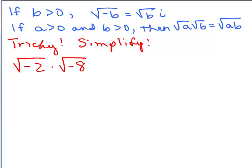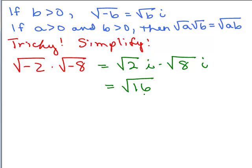Here's the tricky problem. If b is greater than zero, then the square root of negative b equals the square root of b times i. And only if a and b are both greater than zero can you multiply square roots together. Try this: square root of negative 2 times square root of negative 8. Rewrite as √2·i times √8·i. Since the numbers under the square root are now positive, multiply them: square root of 16, and i times i is i squared. Square root of 16 is 4, and i squared equals negative 1, so the answer is negative 4.